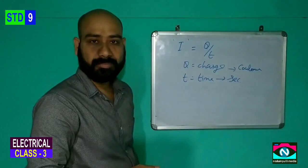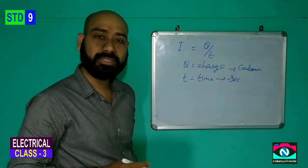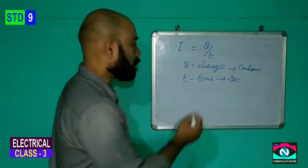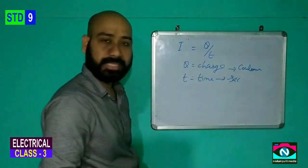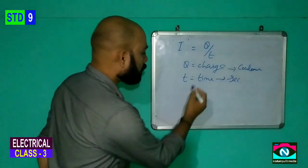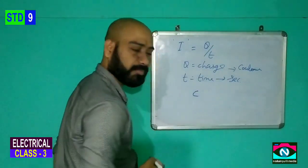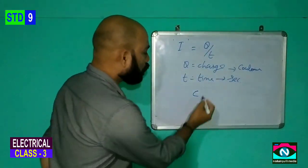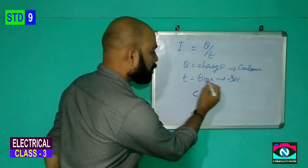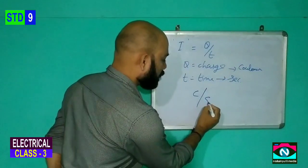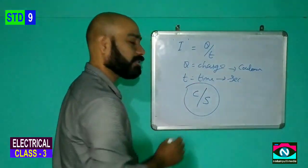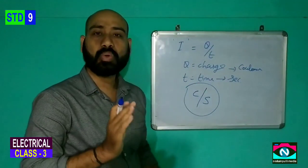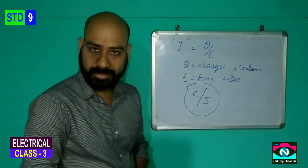Charge by time — coulombs per second. Current unit: coulombs per second.